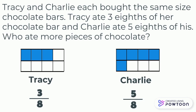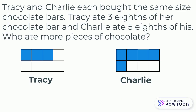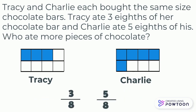The alligator mouth will face towards the larger fraction. We can complete this comparison statement by writing a less-than symbol in the middle. We will read this comparison statement as three-eighths is less than five-eighths.